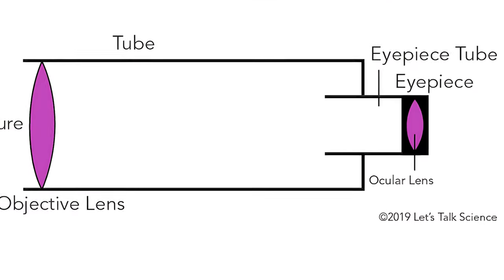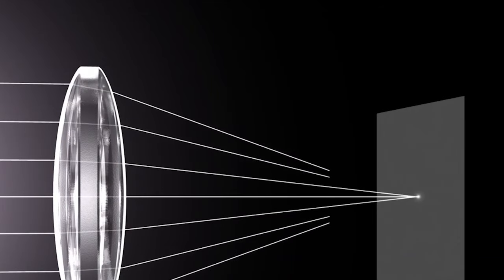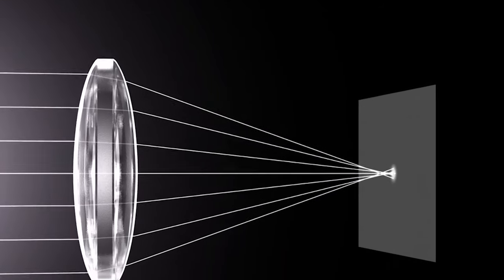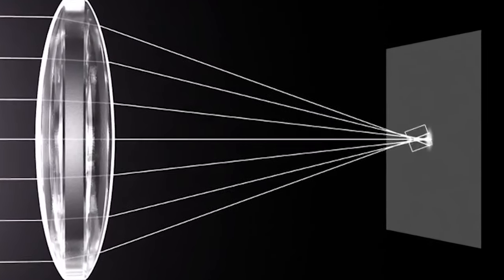As light rays enter the objective lens, they refract and converge. The objective lens has a bulging, convex shape, which bends the light rays toward each other. This bending of light converges the rays, causing them to meet at a specific focal point inside the telescope.